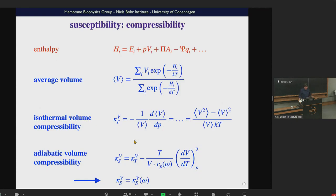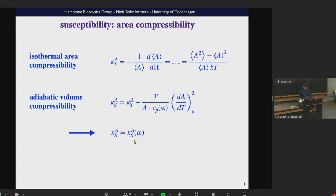The same applies for other susceptibilities. The volume compressibility is the derivative of volume with respect to pressure. Since the enthalpy in the Boltzmann term depends on pressure, you find that volume compressibility is proportional to fluctuations in volume. Similarly, using Maxwell relations, you can calculate the adiabatic compressibility from the isothermal one. The same trick applies for area compressibility — proportional to fluctuations in area — and capacitance is proportional to fluctuations of charge. Every single susceptibility is proportional to a fluctuation in some extensive quantity.